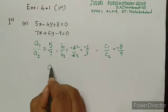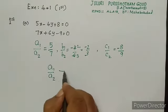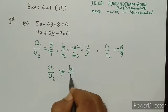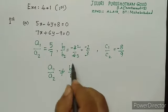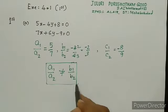So, first of all, here a1 by a2 is not equal to b1 by b2. Is it clear?